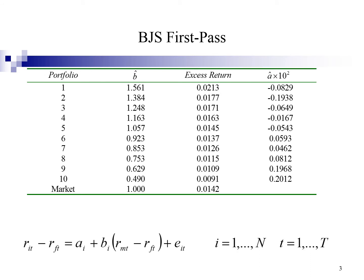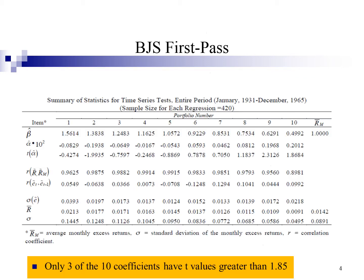This slide shows the result of the BJS first-pass regression. There are 10 portfolios in the sample. The beta, average excess return, and alpha have been generated based on the equation given in the slide. This is a time series regression. The hypothesis for the time series test is that the intercept alpha should equal zero. If alpha equals zero, this confirms the positive relation between beta and returns based on CAPM. If alpha is different from zero, the CAPM cannot hold.